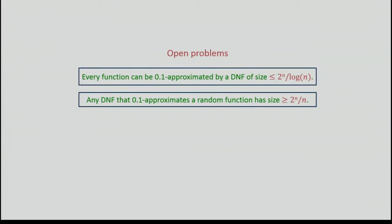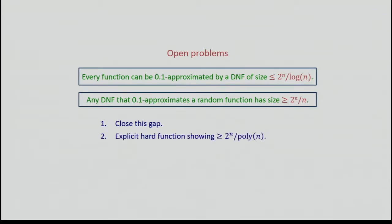Let me conclude with a few open problems. We showed a universal upper bound: every boolean function can be 0.1-approximated by a DNF of size at most 2^N / log N, and a lower bound of 2^N / N against a random function. A fundamental question is to close this gap between 2^N / N and 2^N / log N. Even more, I'd like to find an explicit hard function with a lower bound of at least 2^N / poly(N). Right now I don't have a candidate function that's strictly harder than parity to approximate — finding one explicitly would be very interesting.